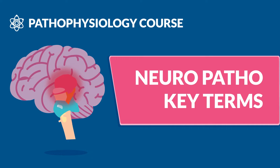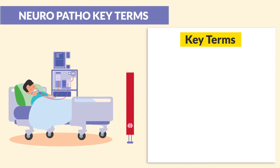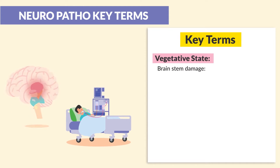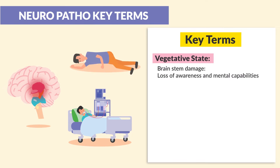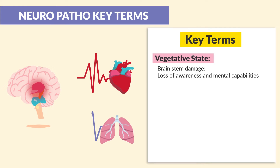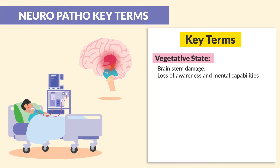Neuropatho key terms is the next topic, so please be sure to write these down. First up is vegetative state. There's brainstem damage, so there's loss of awareness and mental capabilities. Since the brainstem plays a big part in controlling the heart rate and respiratory rate, clients will typically have to go on life support, or a ventilator may be needed to help the client breathe.